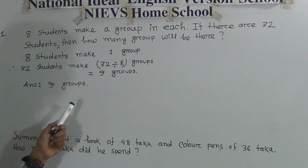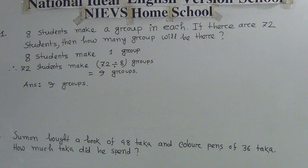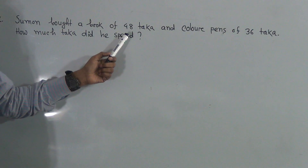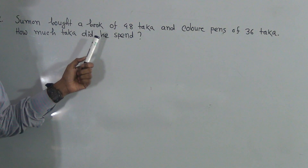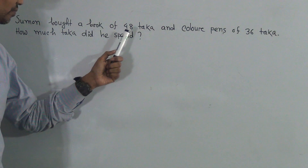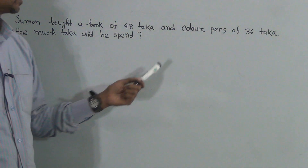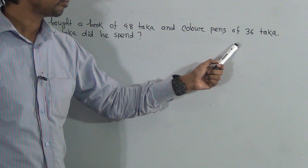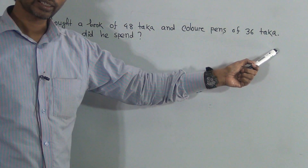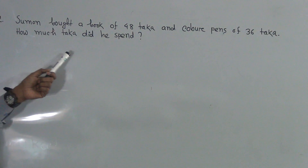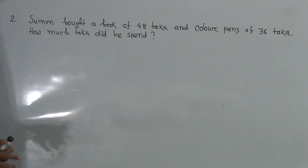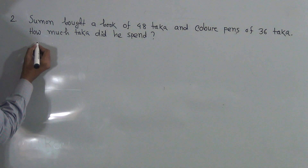Now I will solve question number 2. Someone bought a book for 48 taka — that means the price of one book is 48 taka — and color pens for 36 taka — that means the price of color pens is 36 taka. The question is: how much taka did he spend in total?